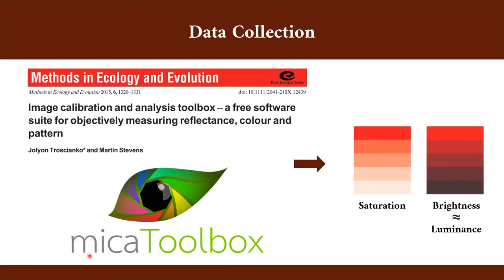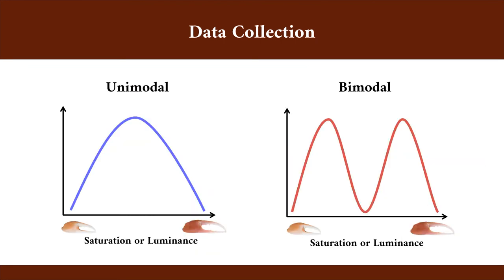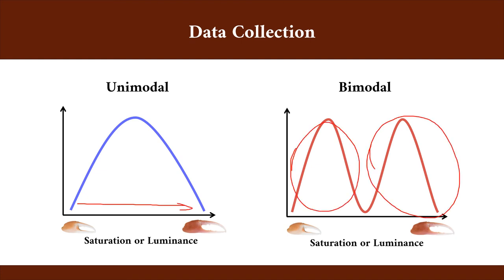We used the MICA toolbox developed by Troscianko and Stevens to quantify the claws' saturation and luminance, which is related to brightness. We tested if the color attributes followed a unimodal or bimodal distribution to see if there is continuous variation in claw color or if there are well-defined classes of color within a population.